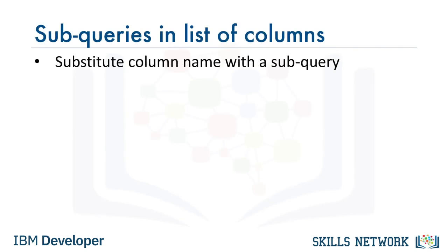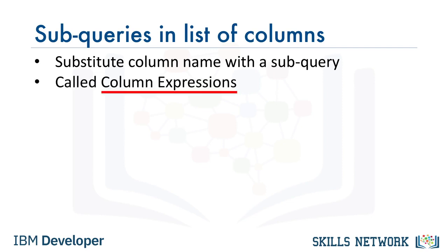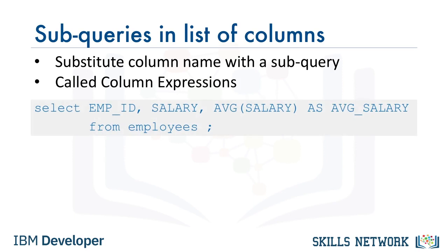The subselect doesn't just have to go in the WHERE clause. It can also go in other parts of the query, such as in the list of columns to be selected. Such subqueries are called column expressions. Now, let's look at a scenario where we might want to use a column expression. Say we wanted to compare the salary of each employee with the average salary. We could try a query like: SELECT employee_id, salary, AVG(salary) AS average_salary FROM employees.